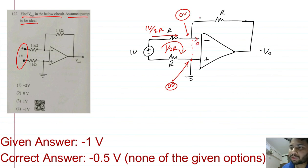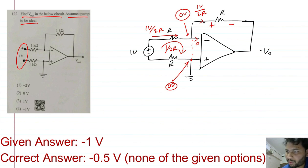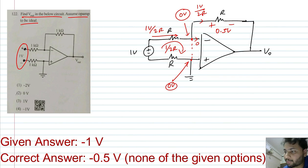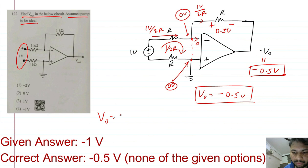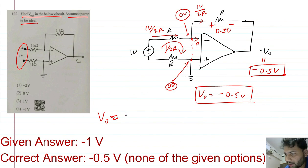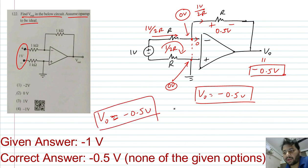The input current to the op-amp is 0, so this current is also 1/2R. A current of 1/2R flowing through R gives a voltage drop of 1/2R × R = 0.5 volts. Since V- is 0 volts, going from plus to minus we subtract the drop, so V-out = -0.5 volts. This answer is not among the given options, so marks for this question should be granted to all irrespective of the response. The correct answer is V-out = -0.5 volts.